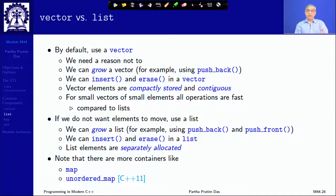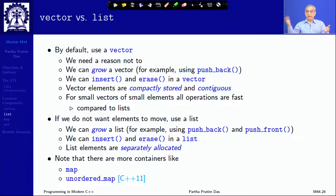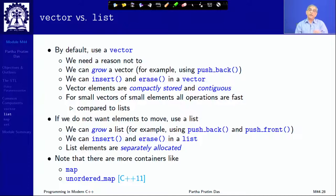If there is no other reason, you should use a vector — it is most efficient. You can grow both vector and list, but vector can only grow at the back while list can grow at both ends. Vector has more compact contiguous storage; list has separate allocations.